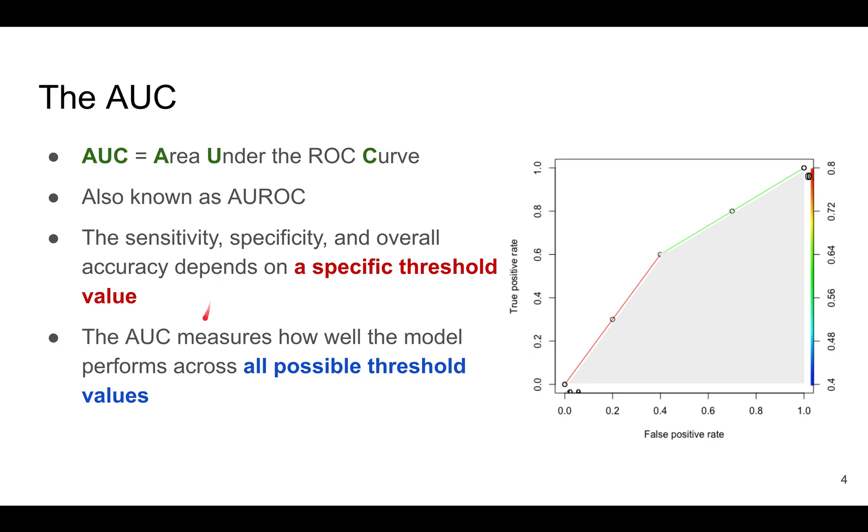On the other hand, the AUC measures how well the model performs across all possible threshold values. The AUC is defined as basically the area, this area, the shaded gray area under the ROC curve.